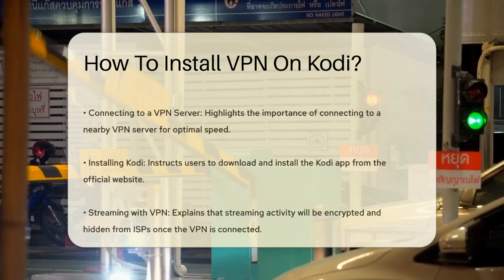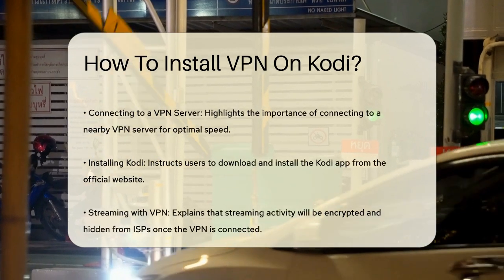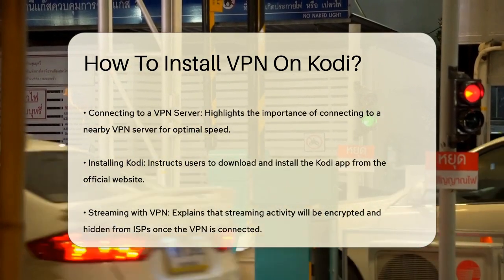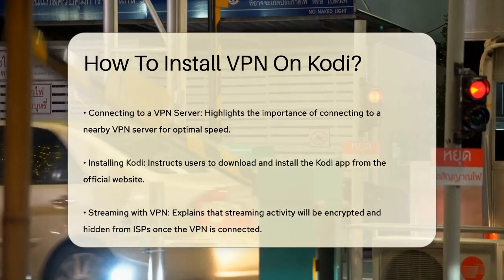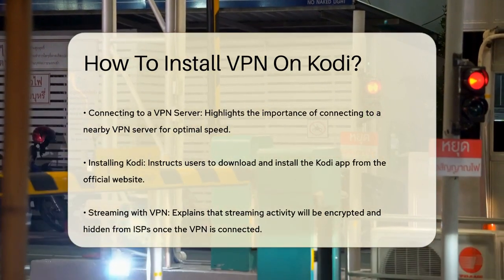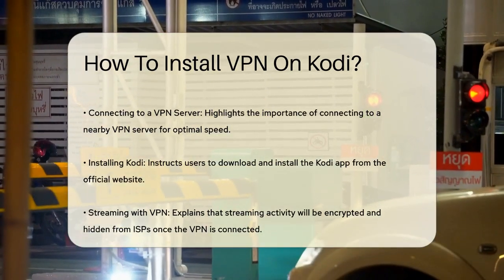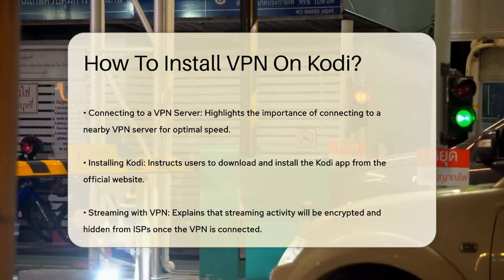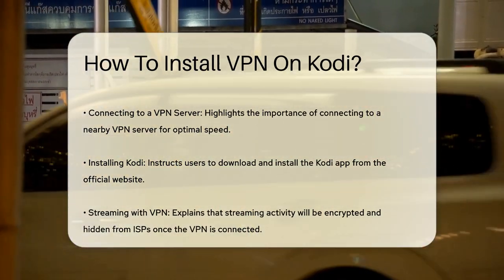Next, download and install the Kodi app from the official Kodi website if you haven't already. After you've connected to the VPN, open Kodi and start streaming. Your streaming activity will now be encrypted and hidden from your ISP.